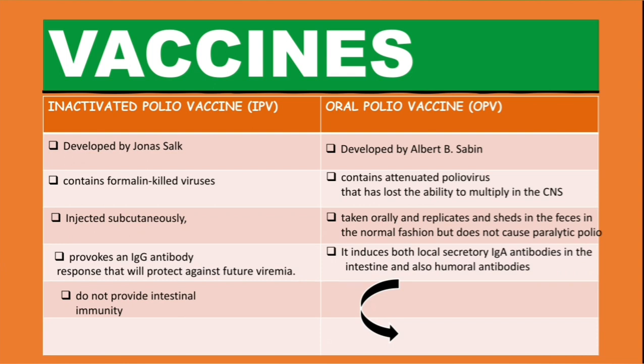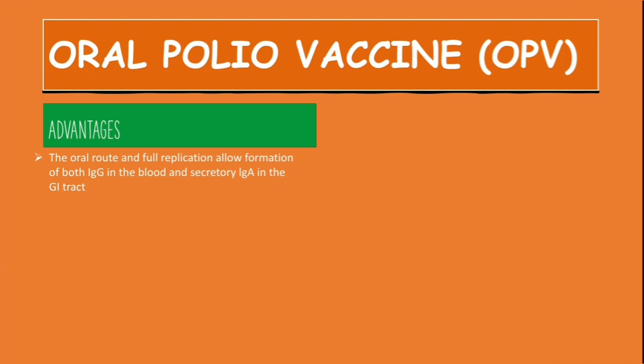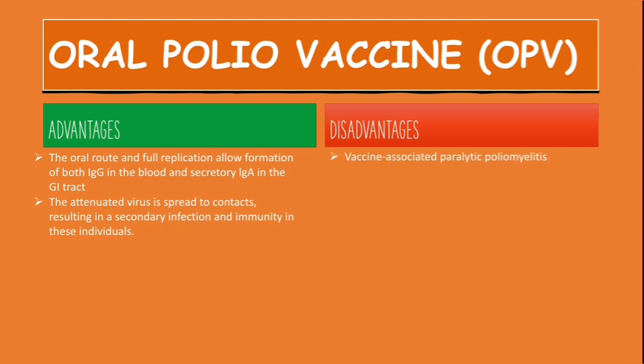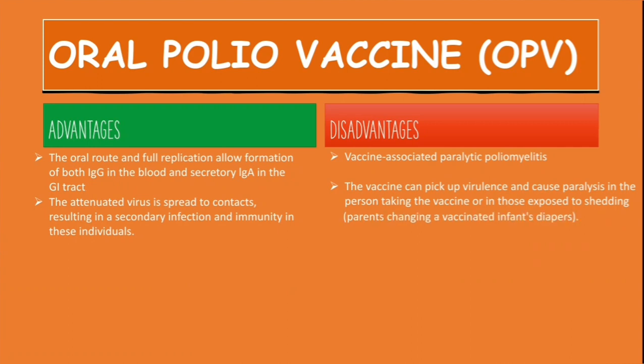The OPV has some advantages and disadvantages. The first advantage is that the oral route and full replication allows formation of both IgG in the blood and secretory IgA in the GI tract. Additionally, the attenuated virus is spread to contacts, resulting in secondary infection and immunity in those individuals. The main disadvantage is vaccine-associated paralytic poliomyelitis, which occurs because the vaccine can revert to virulence and cause paralysis in the vaccine recipient or those exposed to shedding — for example, parents changing a vaccinated infant's diapers. Finally, OPV cannot be given to patients with immunodeficiency.